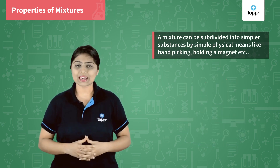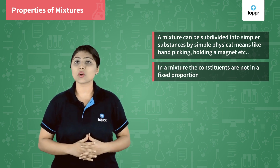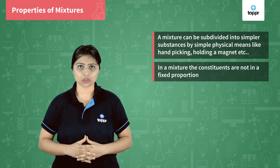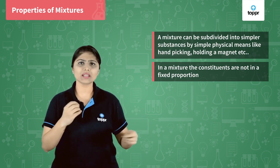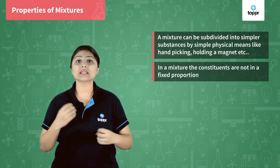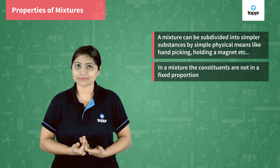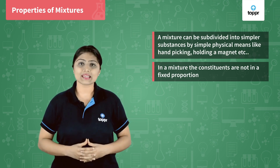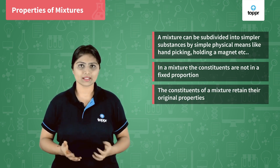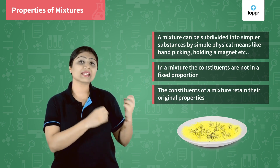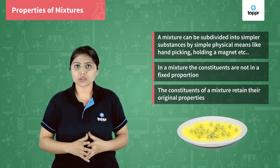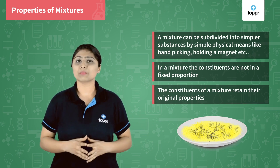The second property says that in a mixture, the constituents are not present in a fixed proportion — they are present in any proportion. If we have to mix iron and sulfur, we can mix it in any proportion. Even in bhel, we can mix substances in any proportion as we wish. The next property says that the constituents of a mixture retain their original properties. In the mixture of iron and sulfur, iron is still iron and sulfur is still sulfur — they have not lost their original properties.